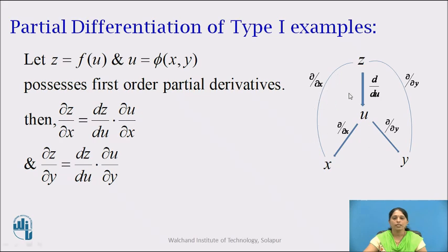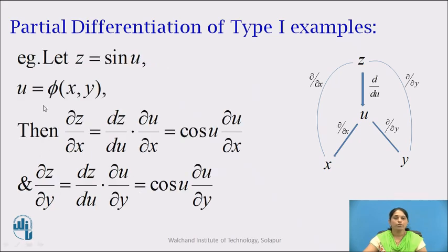To obtain ∂z/∂x, we multiply dz/du and ∂u/∂x. So we get ∂z/∂x = dz/du · ∂u/∂x. Similarly, to obtain ∂z/∂y, we multiply dz/du and ∂u/∂y. So we get ∂z/∂y = dz/du · ∂u/∂y. For example, if z = sin(u) and u = phi(x, y), then ∂z/∂x = dz/du · ∂u/∂x = cos(u) · ∂u/∂x. Similarly, ∂z/∂y = dz/du · ∂u/∂y = cos(u) · ∂u/∂y.